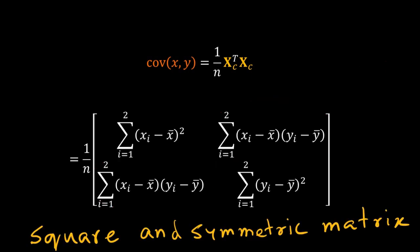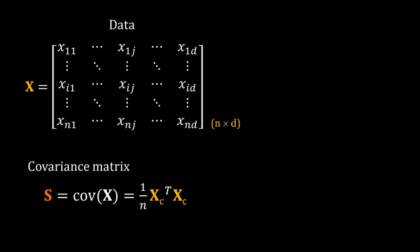Now from a two-dimensional system I generalize the covariance matrix for a d-dimensional system. For data X the covariance matrix S is equal to 1 by N into XC transpose XC. XC is the matrix X after centered. Now data centering is done by default in PCA. So I will drop the subscript C. So the covariance matrix S is equal to 1 by N into X transpose X. From now on by X I mean centered data.